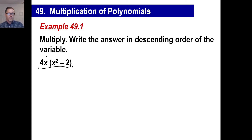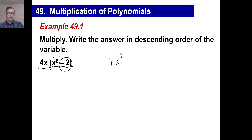What we'll do is take the 4x first and multiply it by the x squared. When we do that, we get 4x to the first times x to the second — x to the third. Now we take the 4x and multiply it by the negative 2. Well, 4x times negative 2 would be negative 8x.